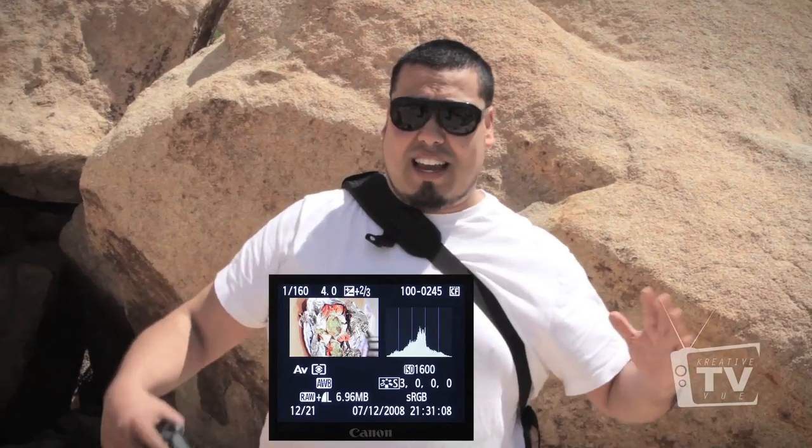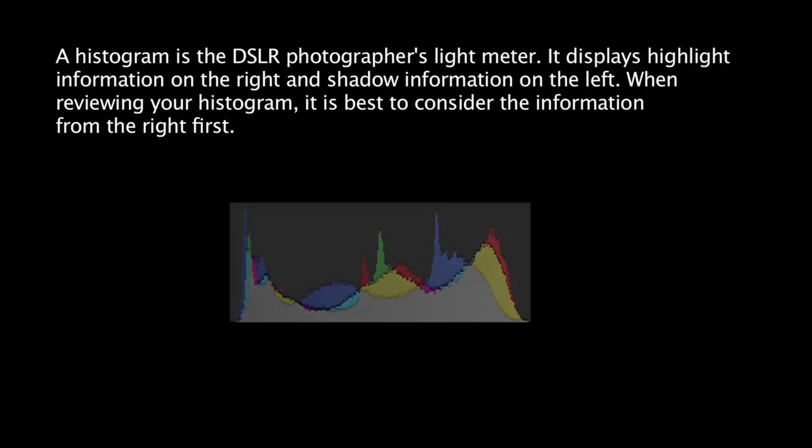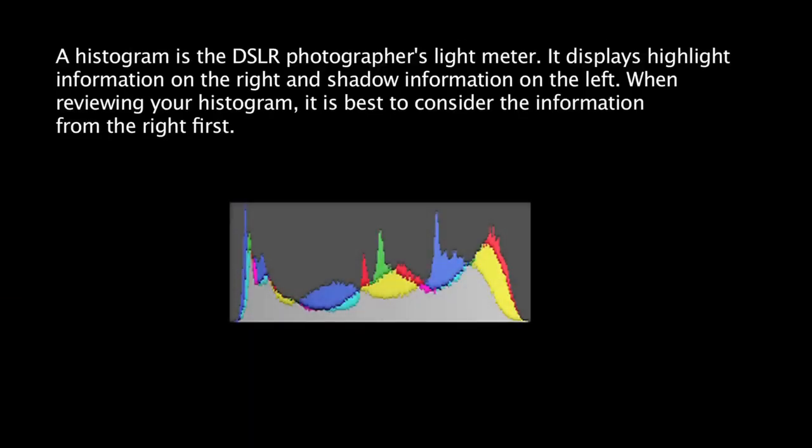What your histogram does is it shows you if you've got too much darks, too much lights, and all those things. Your histogram is raw light data in the form of a graph which tells you about your blacks, shadows, midtones, highlights, and whites. It is also responsible for telling you if you've lost data due to overexposing or underexposing your images.